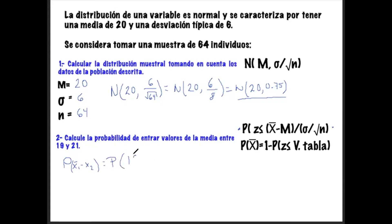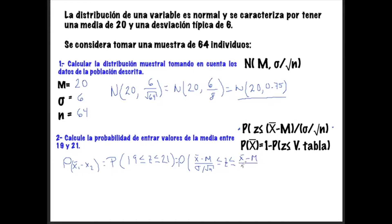Contemplando nuestro primer límite inferior de 19, que sería menor o igual a Z, y menor o igual a nuestro límite superior que es 21. Entonces, si sustituimos en la fórmula: (x̄ - μ) / (σ / √n) ≤ Z ≤, el valor se encuentra entre 19 y, de la misma manera, (x̄ - μ) / (σ / √n), tendríamos la probabilidad para este intervalo.